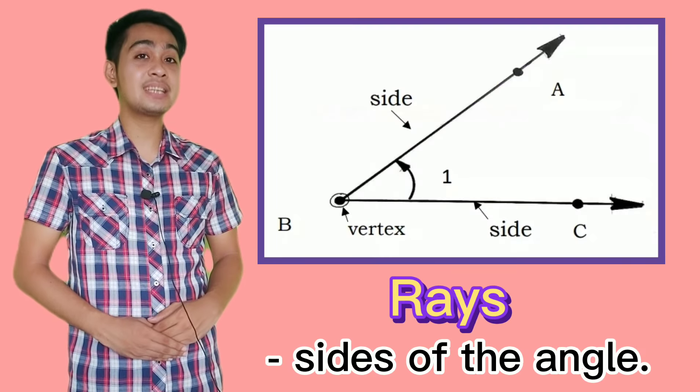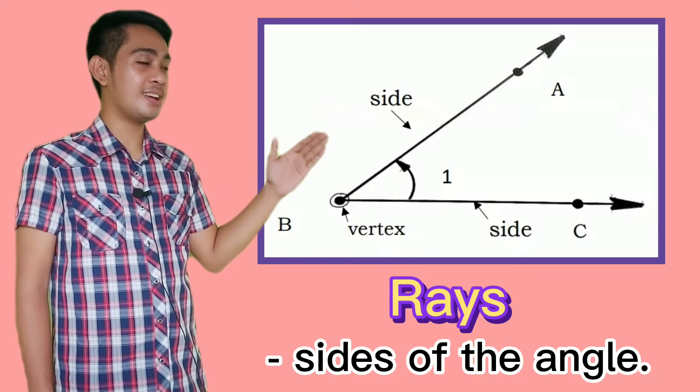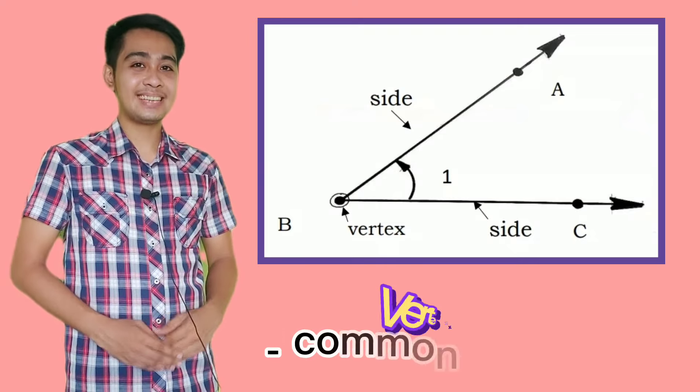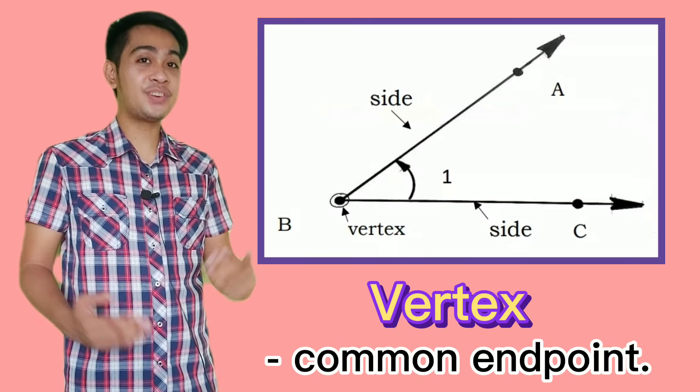The rays are called the sides of an angle. Ray BA meets with Ray BC at point B. And the common endpoint is called the vertex. So point B is our vertex.